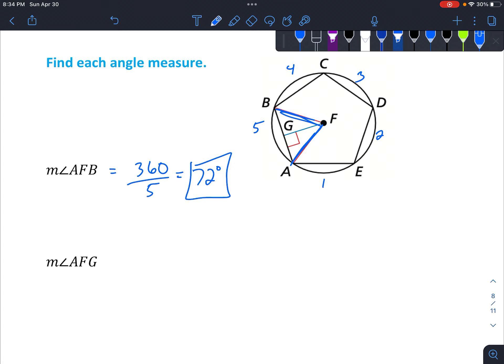And so that's the angle right here. 72 degrees. And the measure of angle AFG. Okay, so AFG is half of that, right? Because there's two angles that are the same right here. So we're basically going to divide the answer that we just got by 2 to get 36 degrees.